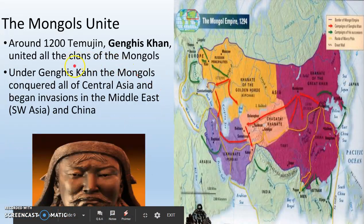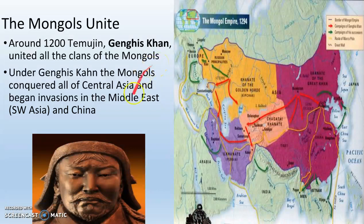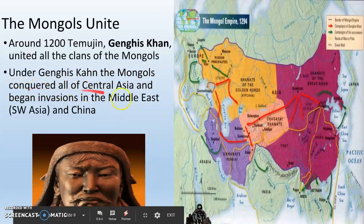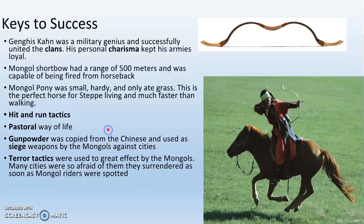Around 1200 CE, Genghis Khan united all the clans of the Mongols into one big giant clan. Under Genghis Khan, the Mongols conquered all of Central Asia and began invasions into the Middle East and China. The Mongols succeeded — they conquered China and most of the Middle East. Here are the reasons why they were so successful.